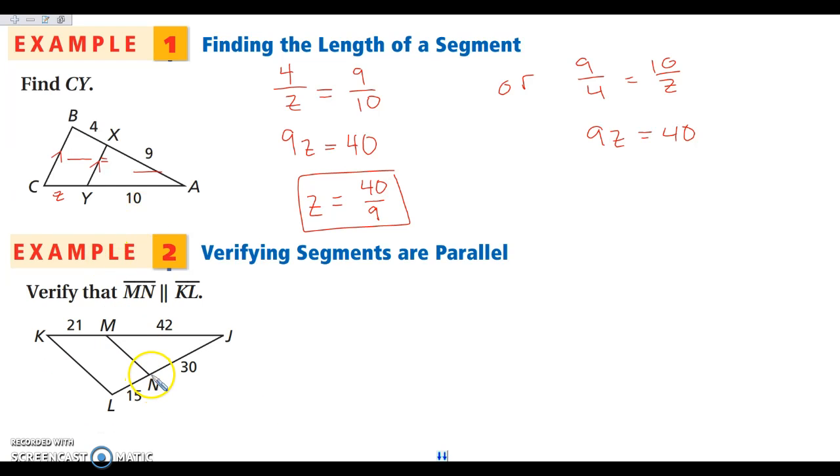We're going to do the same thing here. I want to verify that these lines are parallel, which means that these should be in proportion. So again, I'm going to draw in my fraction bar, my equal sign, and my fraction bar. So what I want to know is, is 21 over 15 going to be the same ratio as 42 over 30? So when we reduce this, these are both divisible by 3. This is going to give me 7 over 5. And these are both divisible by 6. This is also going to be 7 over 5. So they are equal, which means that MN is parallel to KL. That is using that converse of the theorem. So example 1 was using the original theorem. Example 2 is using the converse to show that those lines are parallel.